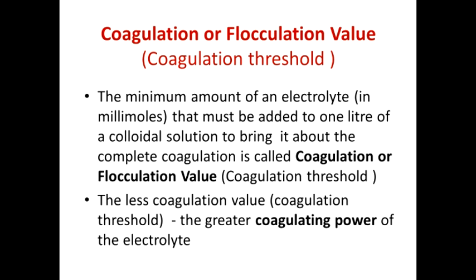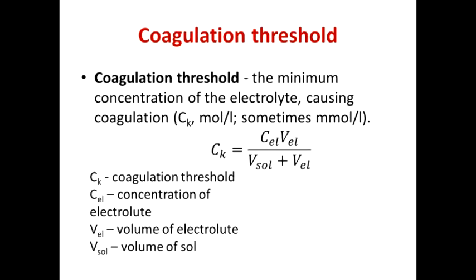We will discuss coagulation caused by salt addition. The minimum amount of electrolyte that must be added to one liter of colloidal solution to cause coagulation is called the coagulation value or coagulation threshold. The smaller the coagulation threshold, the greater the coagulating power of the electrolyte. The coagulation threshold is calculated by the formula: γ = (C_electrolyte × V_electrolyte) / V_sol, where C is concentration and V are volumes. Units are mol/L or, more often, mmol/L.